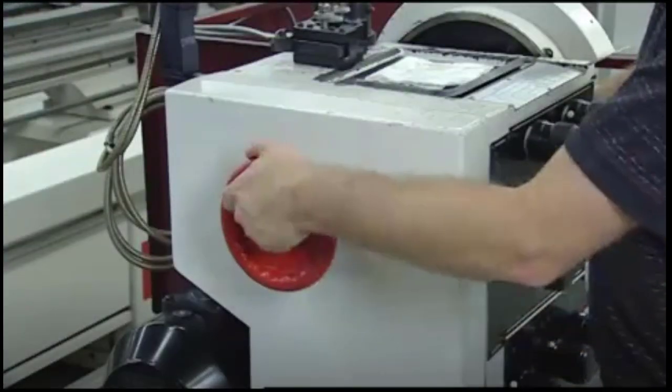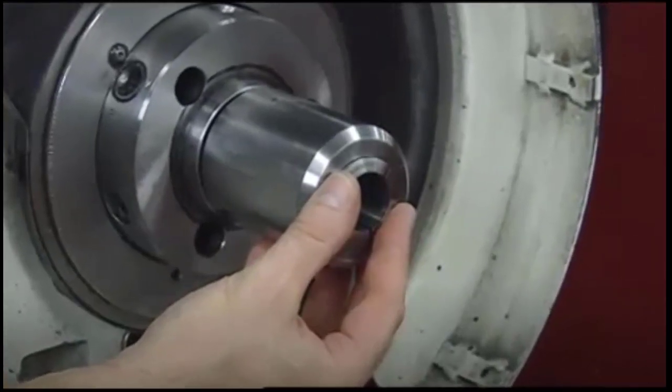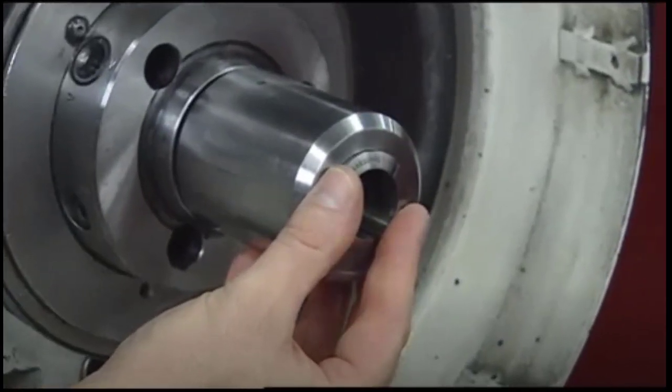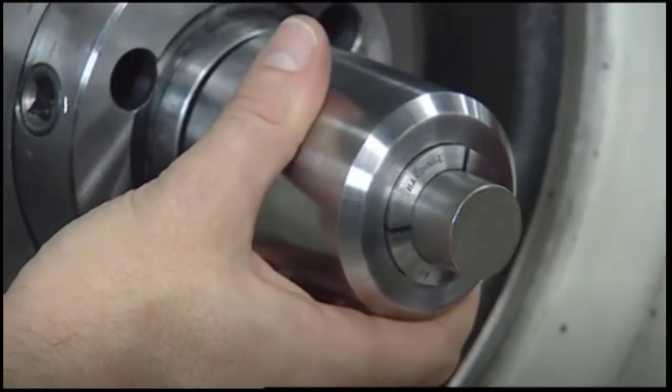Next, thread the draw tube onto the collet, stopping when there's about one-eighth of an inch of collet movement in the adapter. Insert the workpiece into the collet and tighten the draw tube to secure the piece.